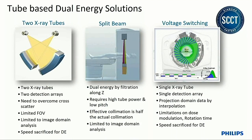The challenges with the two-tube approach: one of the detector arrays is smaller, so there is a limitation in the field of view. There are also issues with cross-scatter that need to be addressed. The big limitation is that all of the analysis is done in the image domain, because there is no ray path covered by both sources and detectors simultaneously. Studies have shown benefits to doing decomposition in projection space, since beam hardening can be addressed more effectively there versus image space.